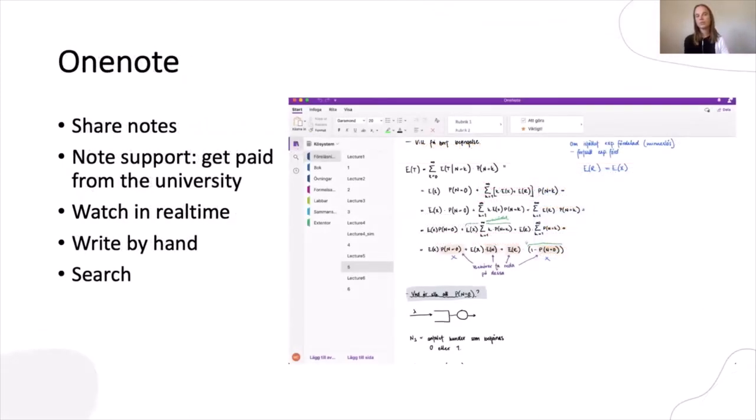OneNote. When I'm not taking notes myself, I use OneNote. The university offers to pay one of my classmates if they share their notes with me. OneNote is then a great tool. The notes get shared in real time. It's possible to write by hand or on the computer. Even if they're written by hand, it's possible to search for a word in the note. In this way, I don't need to copy every note on paper.